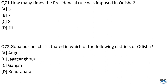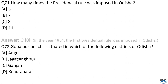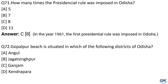Question No. 71: How many times was presidential rule imposed in Odisha? Option A: 5. Option B: 7. Option C: 8. Option D: 11. The answer is Option C, 8. The first presidential rule was imposed in Odisha in the year 1961. Question No. 72: Gopalpur Beach is situated in which district of Odisha? Option A: Angul. Option B: Jagatsinghpur. Option C: Ganjam. Option D: Kendrapada. The answer is Option C, Ganjam.